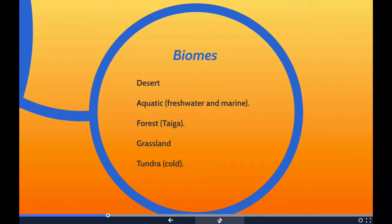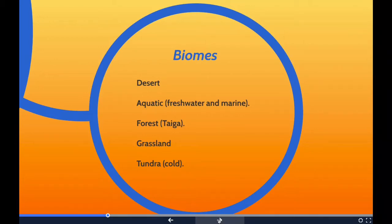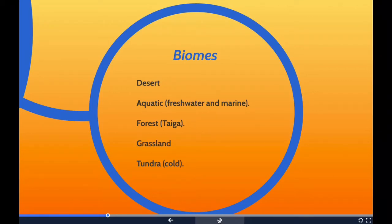Biomes are very large ecological areas on the surface with fauna and flora — that means animals and plants — adapting to their environment. Biomes are often defined by abiotic factors such as climate, relief, geology, soils, or vegetation. A biome is not an ecosystem — you need to know that. If you take a closer look, you'll notice the plants or animals in any of the biomes have special adaptations that make it possible for them to exist in that area. You may find many units of ecosystems within one biome.